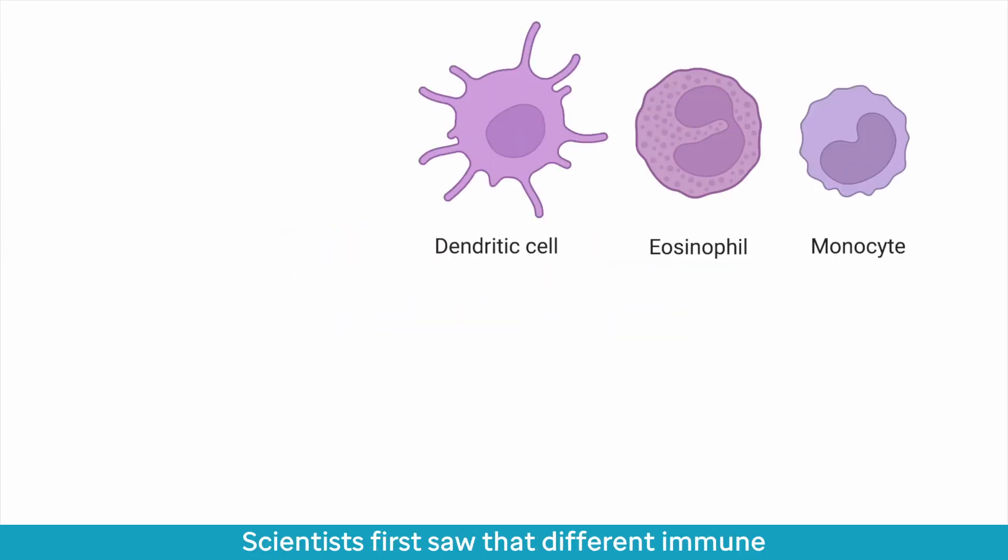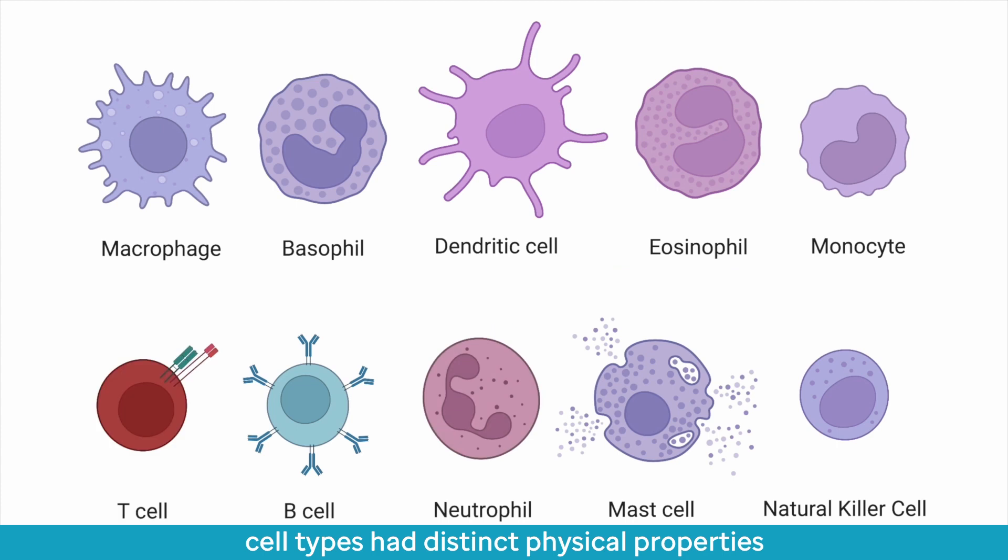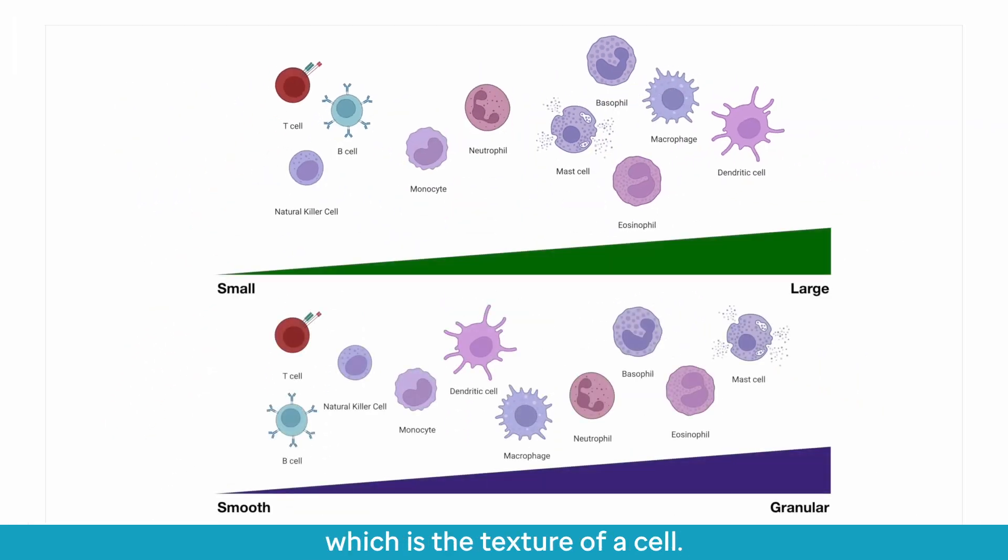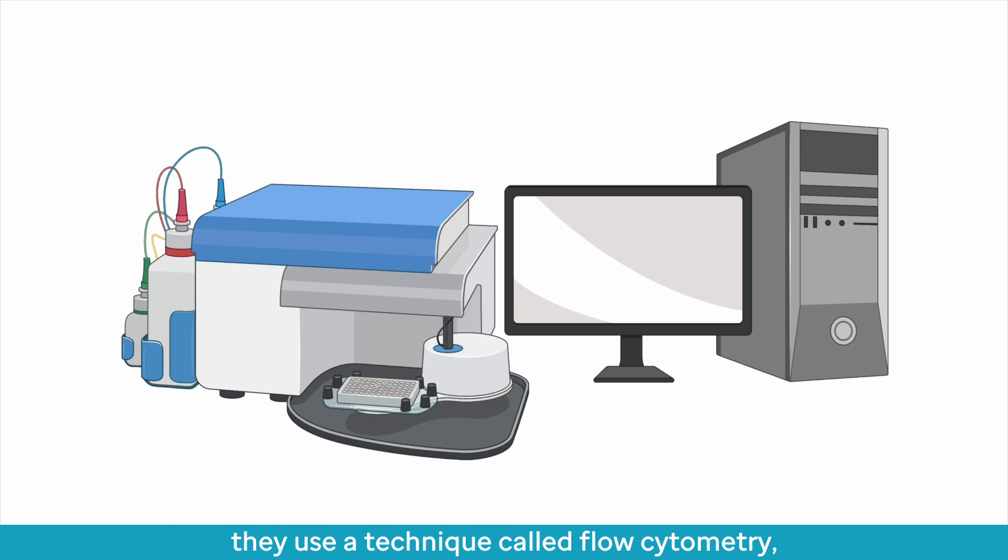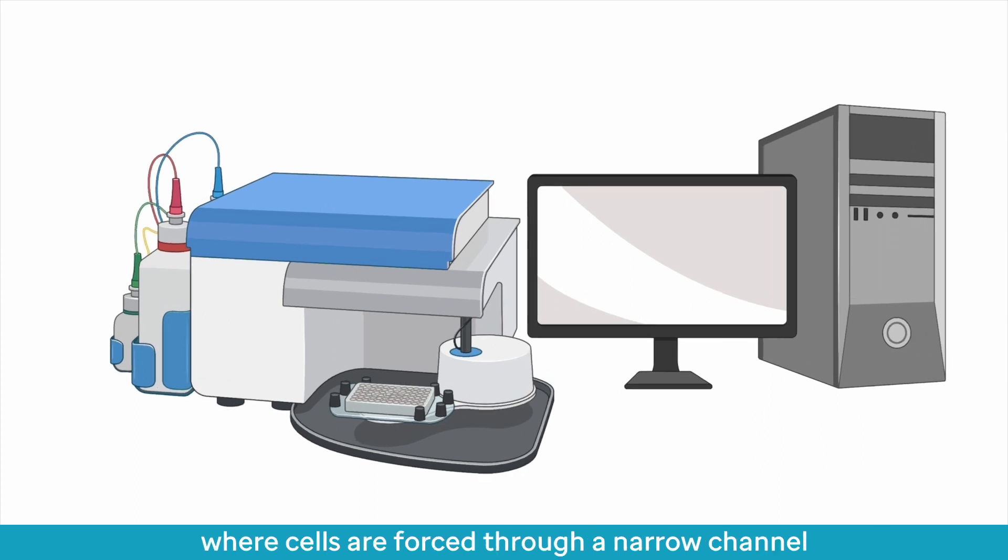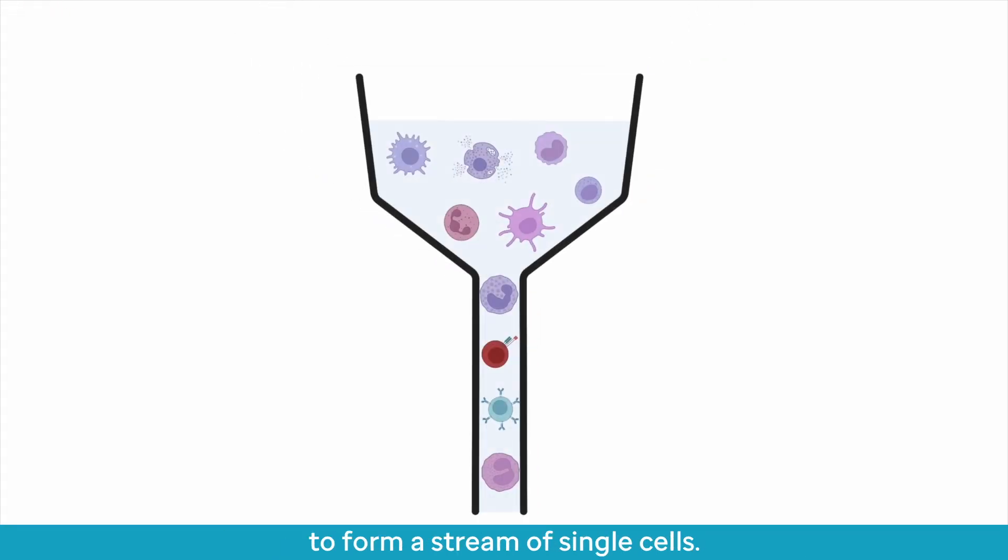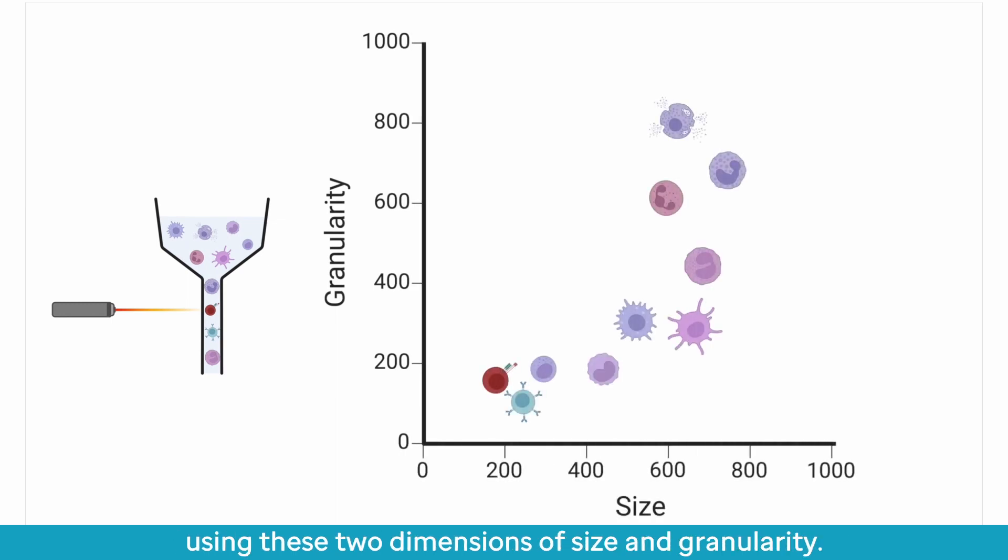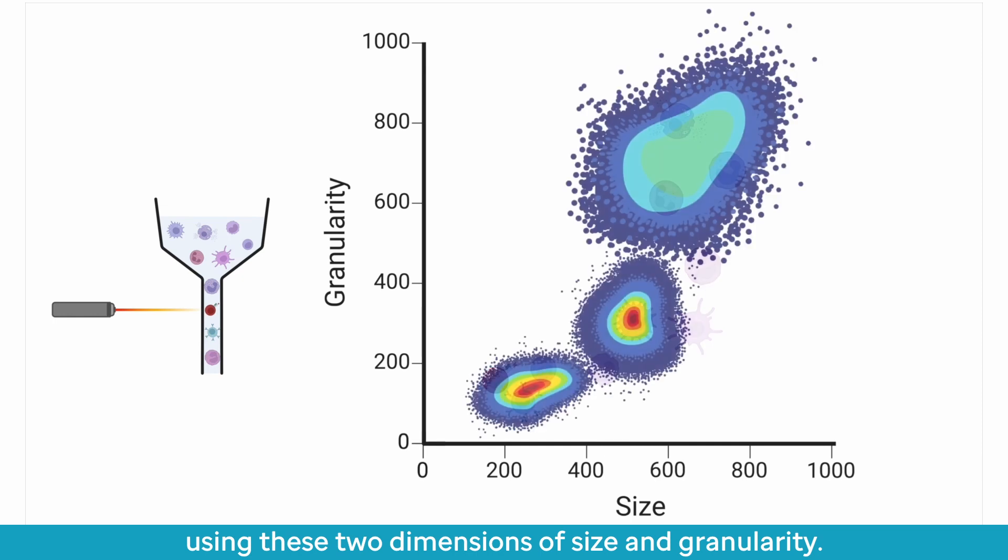Scientists first saw that different immune cell types had distinct physical properties, such as size and granularity, which is the texture of a cell. To visualize these distinct properties, they used a technique called flow cytometry, where cells are forced through a narrow channel to form a stream of single cells. Then, by shining a laser beam at each individual cell, researchers were able to use how the cells deflect light to plot these cells using these two dimensions of size and granularity.